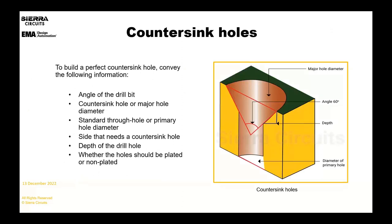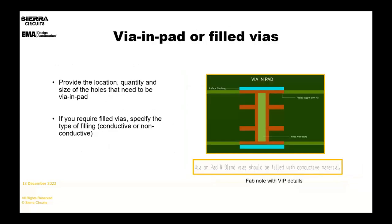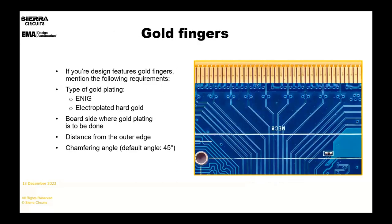For countersinks and counterbores, I'll breeze through this since you'll have the information in the slide. Via-in-pad is critical: state whether it's a conductive epoxy fill, a non-conductive epoxy fill, or even a resin fill — which is okay on an inner layer sub. For gold fingers, it's important to have a layer in your data package that outlines where you want hard gold (on your fingers) and where you want ENIG (where the solder mask openings are). You can also have notes for chamfering the edges of your gold fingers.